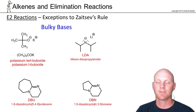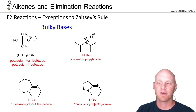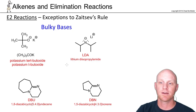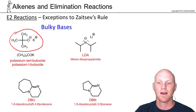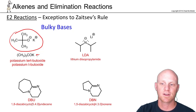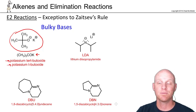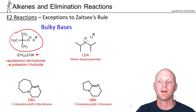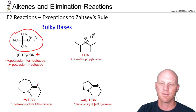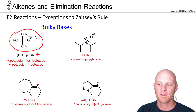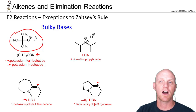With a bulky base you often get the Hoffman product as your major product rather than the Zaitsev. The most common bulky bases: potassium tert-butoxide is by far the most common — you might see it as a Lewis structure, a condensed formula, or written out as potassium tert-butoxide or potassium t-butoxide. The other two you might see are DBU and DBN, where the nitrogen is the basic site. Due to the bulkiness of their rings and significant sterics, these also tend to give the Hoffman product as the major product in E2 reactions.